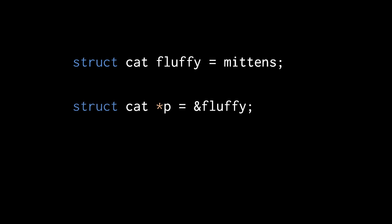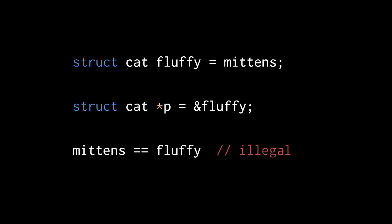We can also create struct pointers as we can with any other type. Here we create a struct cat pointer p and assign it the reference of fluffy, so p now holds a pointer representing the address of the struct cat variable fluffy. Somewhat surprisingly, we cannot compare struct values with the equality operators — this expression is illegal. If you want to compare the corresponding members of two struct values, you have to compare them individually.